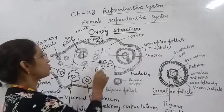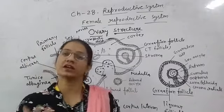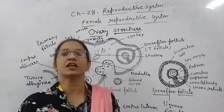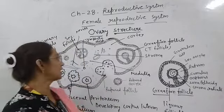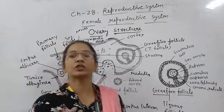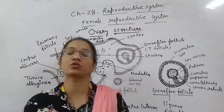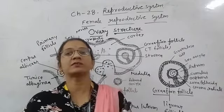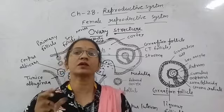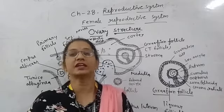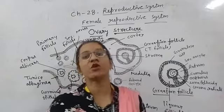The inner area of the stroma is called the medulla. In this medulla there are blood vessels, lymphatic cells, and blood cells. Our main focus is the outer area, the cortex, where the developing follicles are found. Now I will tell you about follicles and how they develop, because we have not yet studied oogenesis.